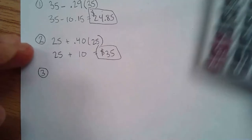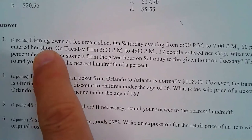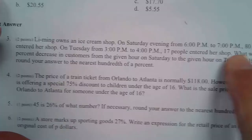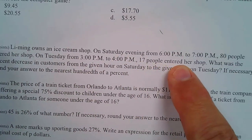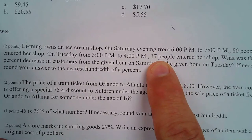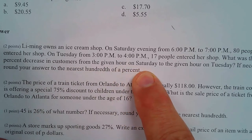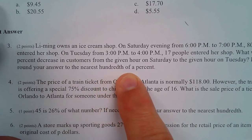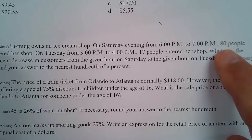Number three — this big paragraph here. Ling Ming owns an ice cream shop. On Saturday evening from 6 to 7, 80 people entered her shop. On Tuesday from 3 to 4, 17 people entered her shop. What was the percent decrease? We know it's a decrease because it goes from 80 to 17. We need to subtract those and divide by the first number, 80.